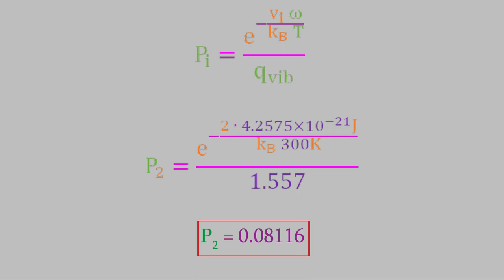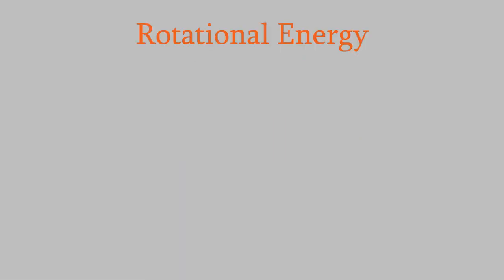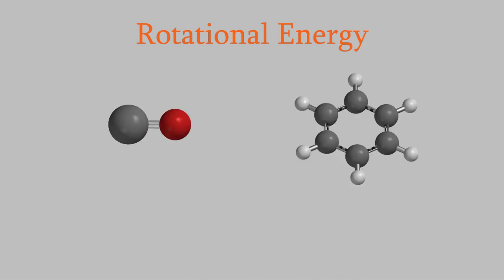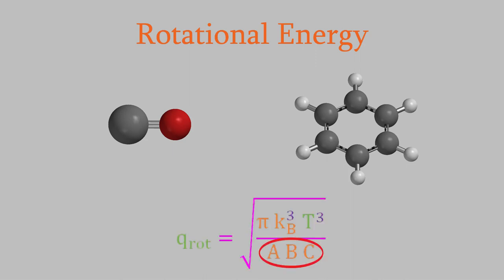Next, let's look at the partition function for rotational energy states. The rotational partition function depends on the geometry of the molecule — it's different depending on whether the molecule is linear, planar, or another shape. A good general expression includes rotational constants A, B, and C for rotations around each of the x, y, and z axes.